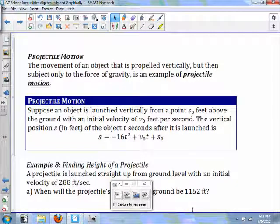The movement of an object that is propelled vertically but then subject only to the force of gravity is an example of projectile motion. Now when I talk about projectile motion, that's more like a cannonball or throwing a football or a baseball or any type of object you're going to throw that is suspect of projectile motion. Suppose an object is launched vertically from a point S0 feet above the ground initial velocity of V0 feet per second. The vertical position S in feet of the object T seconds after it is launched is S equals negative 16 T squared plus V0 T plus S0.